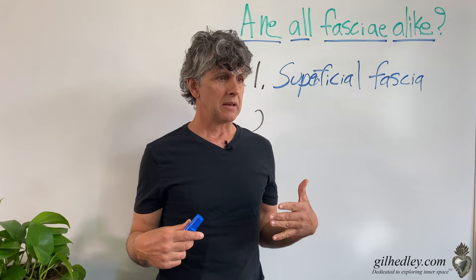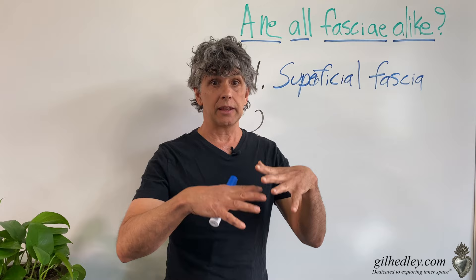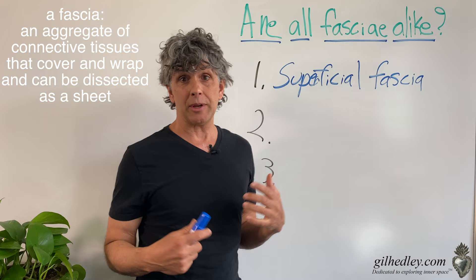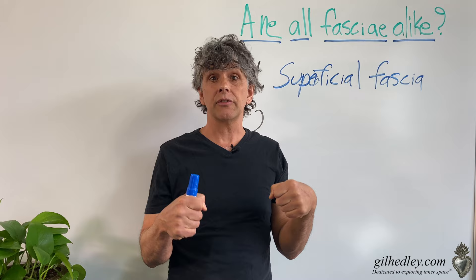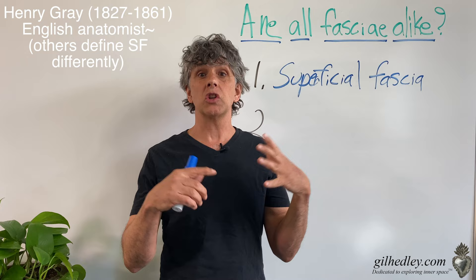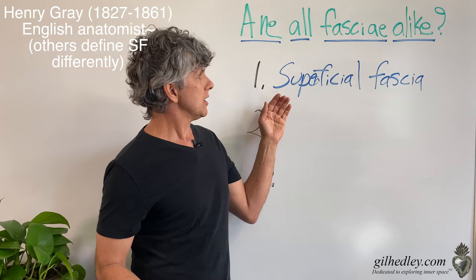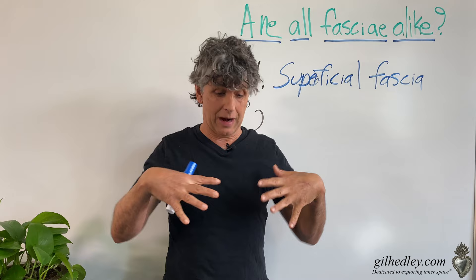For now, let's just say that fascia is an aggregate of connective tissues that cover and wrap and can be dissected as a sheet — that's maybe a definition of fascia that we share. Superficial fascia is definitely an aggregate of connective tissue that can be dissected as a sheet and lifted away from the body. Henry Gray, kind of the progenitor of the English anatomists, that's how he talked about superficial fascia. So superficial fascia is lobular and fatty, and yet it's a wrapping around the whole body.